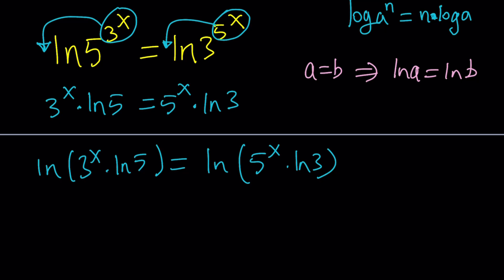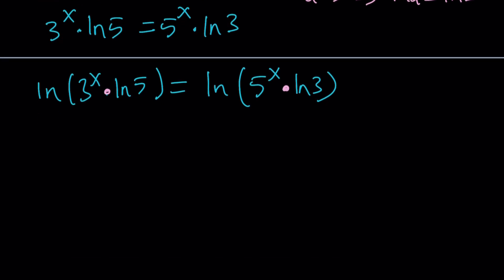Or, in other words, vertical line test. So after logging both sides, again I use natural log because it's natural, right? We're going to have a product. So what is the log of a product? It's the sum of two logs. So we can write it as ln 3 to the power x plus ln ln 5 equals ln 5 to the power x plus ln ln 3. By the way, I forgot to write a double ln here. It's supposed to be ln of ln 5. So that will be a double ln.